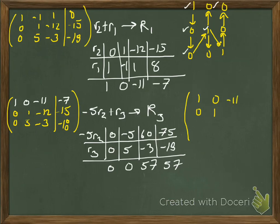So 1, and we'll just write rows 2 and 3 because they are unaffected. The new row 3, 0, 0, 57, 57. Okay. All right. And now we are 2 thirds of the way there. We're almost done.